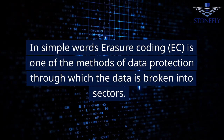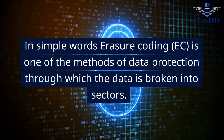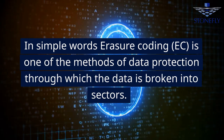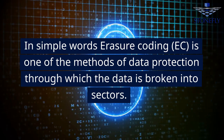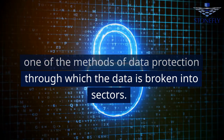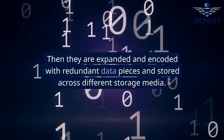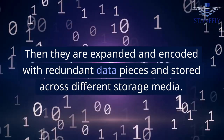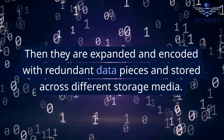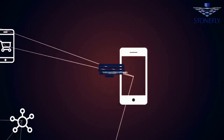In simple words, Erasure Coding, EC, is one of the methods of data protection through which the data is broken into sectors. Then they are expanded and encoded with redundant data pieces and stored across different storage media.